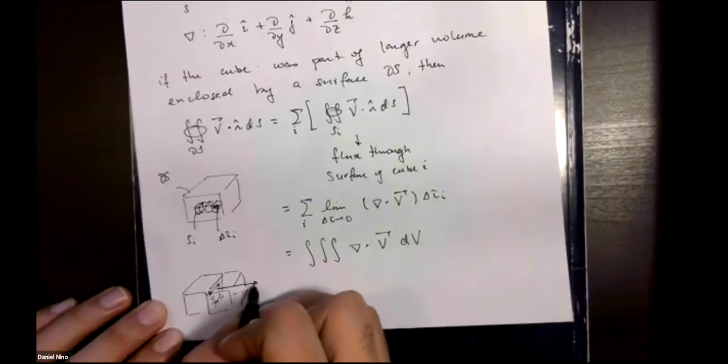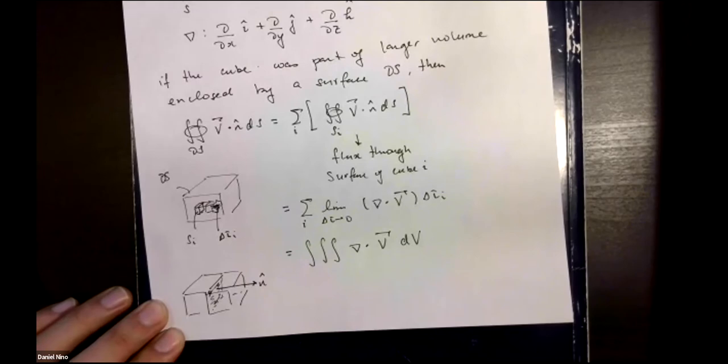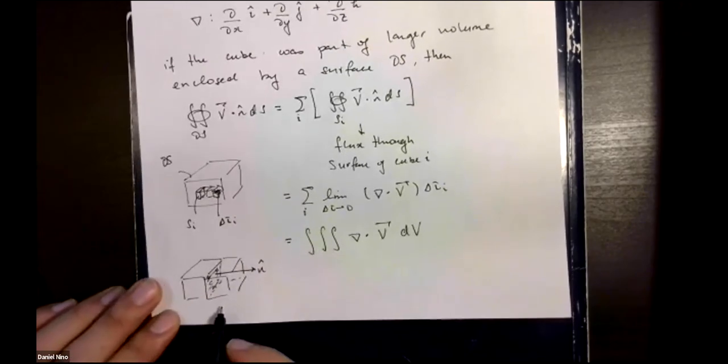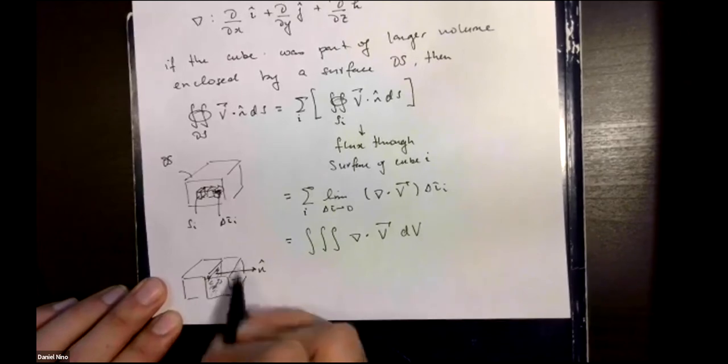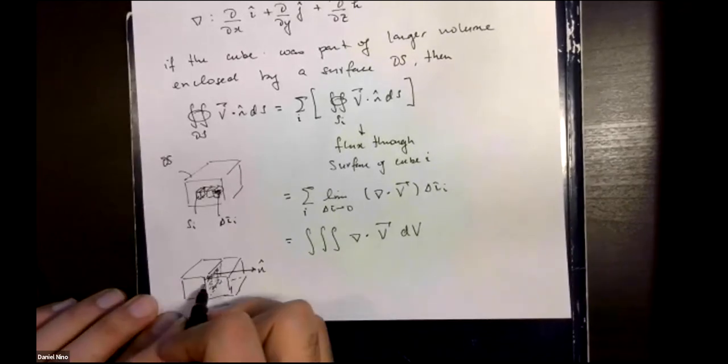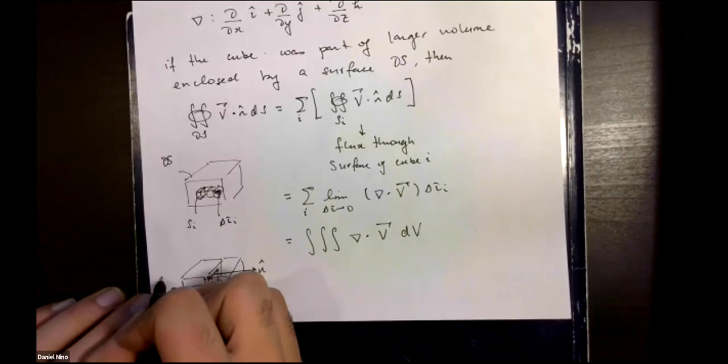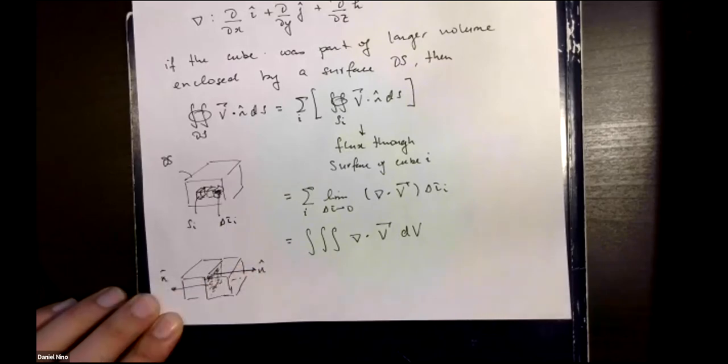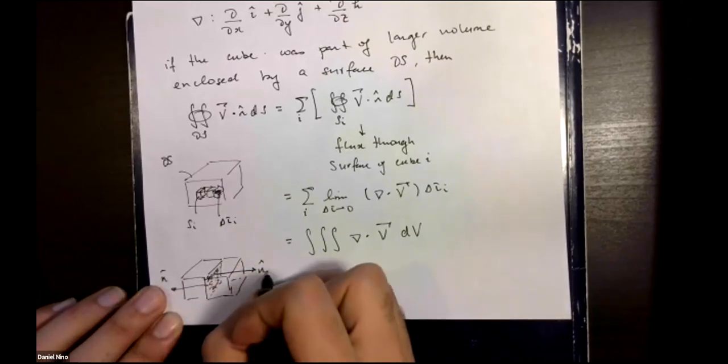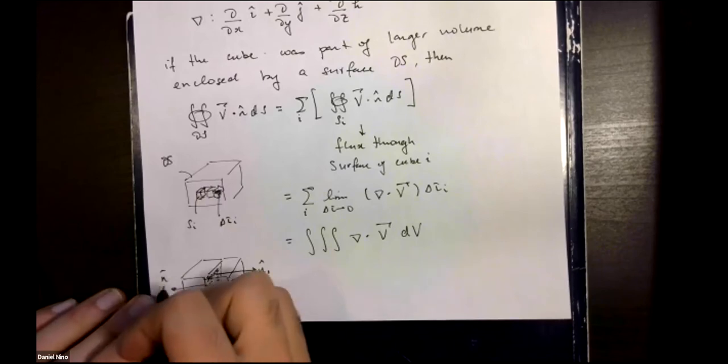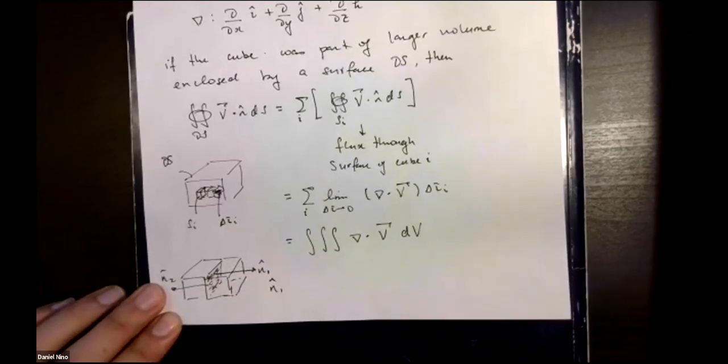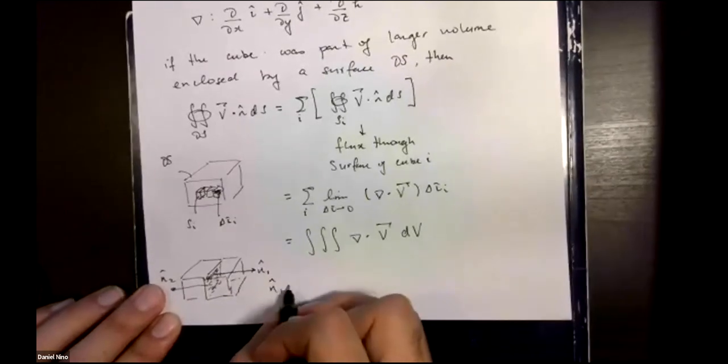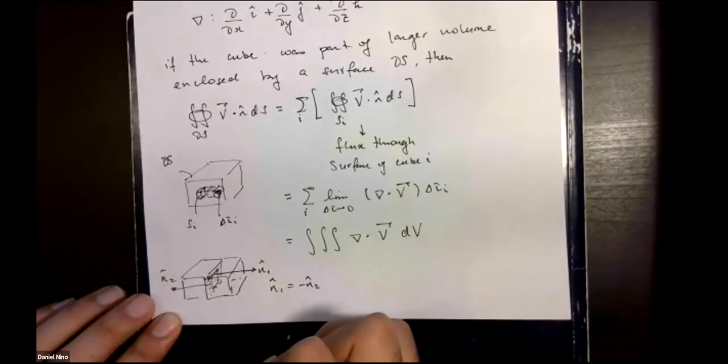But what you have to consider is if you're calculating the flux through this cube, the normal vector to that face is in this direction. And if you're calculating the flux through this cube for this surface again, the normal vector to that surface is in the opposite direction. If we call this n hat 1 and n hat 2, then n hat 1 is equal to negative n hat 2.